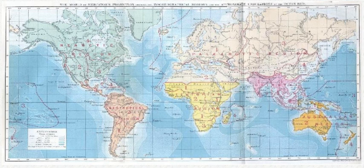Biogeography is an integrative field of inquiry that unites concepts and information from ecology, evolutionary biology, geology, and physical geography. Modern biogeographic research combines information and ideas from many fields, from the physiological and ecological constraints on organismal dispersal to geological and climatological phenomena operating at global spatial scales and evolutionary time frames.